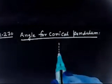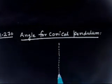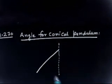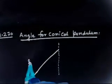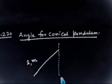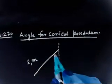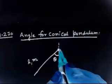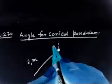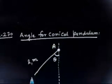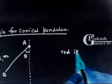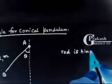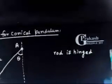So this is the vertical axis we have, and there is a rod. The length of this rod is L and the mass of this rod is M. Let us say this makes an angle theta with the vertical. This rod is hinged at the upper point — let us call this point A and this point B.